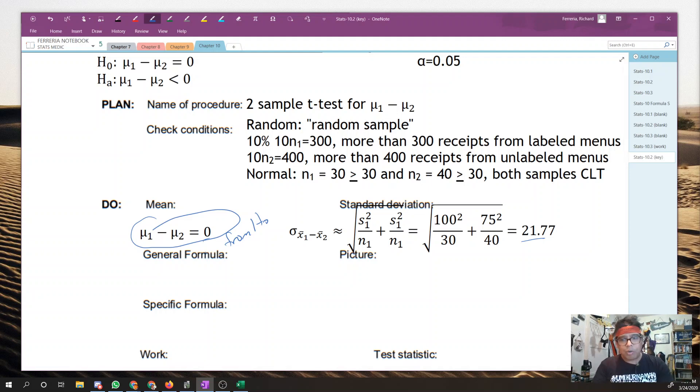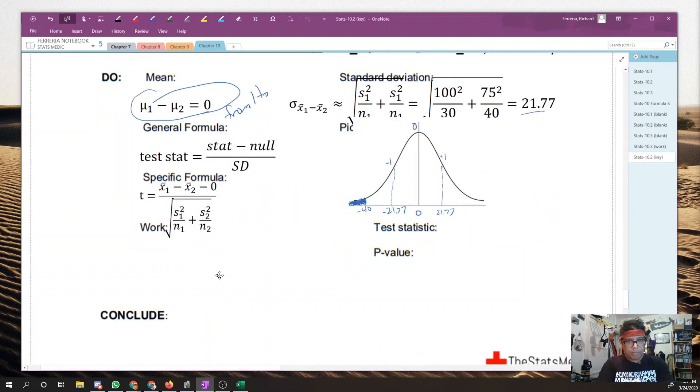I had a little bit of trouble fitting all this stuff in here, but you can see the specific formula here. X bar 1 minus x bar 2 minus zero, that was our null, divided by the standard error that we got from our previous learning target. What am I saying?